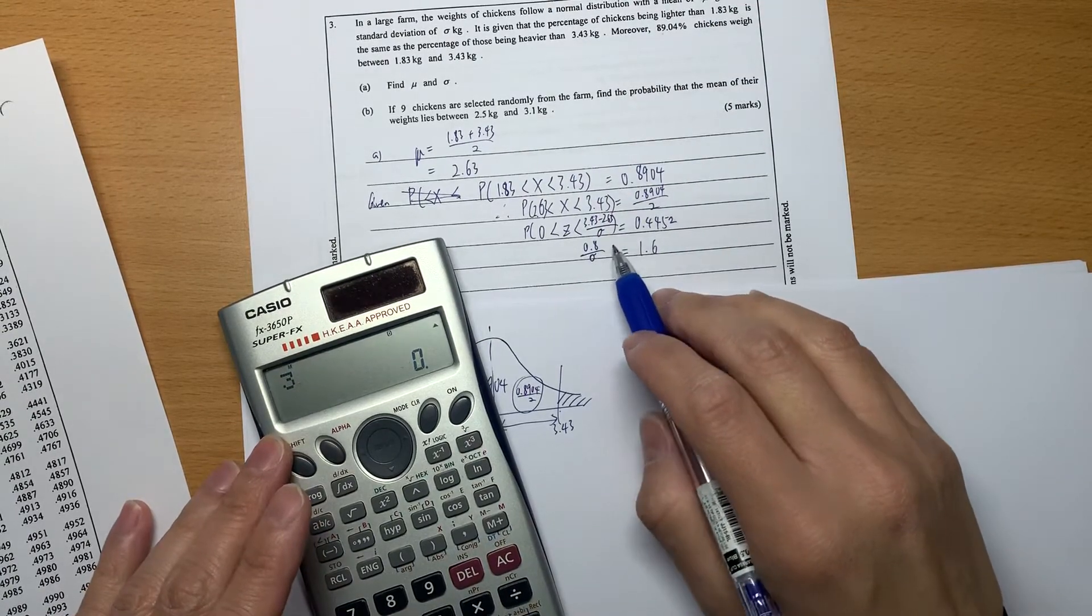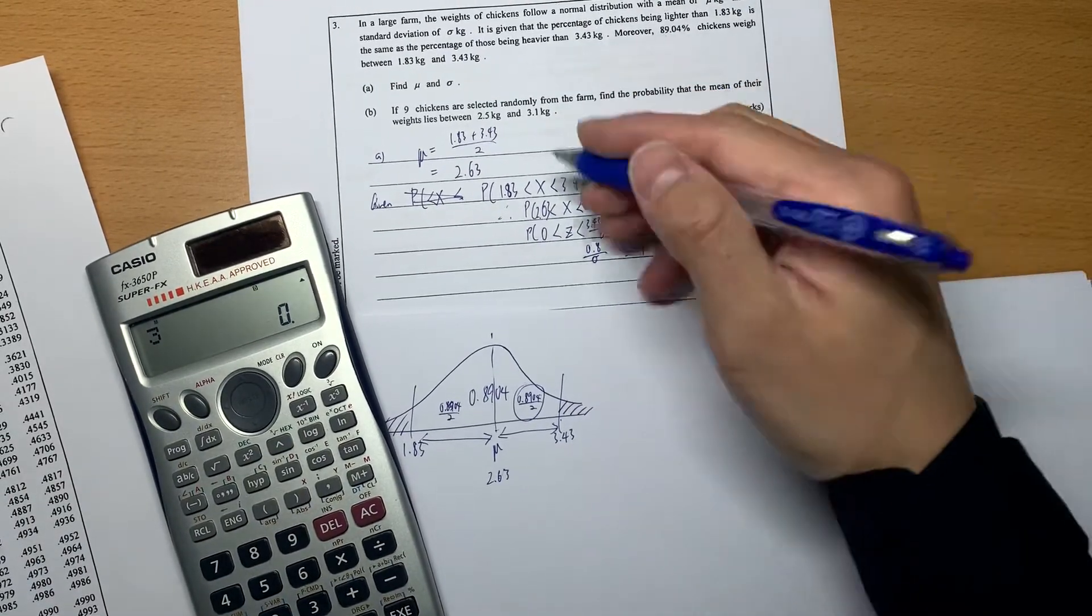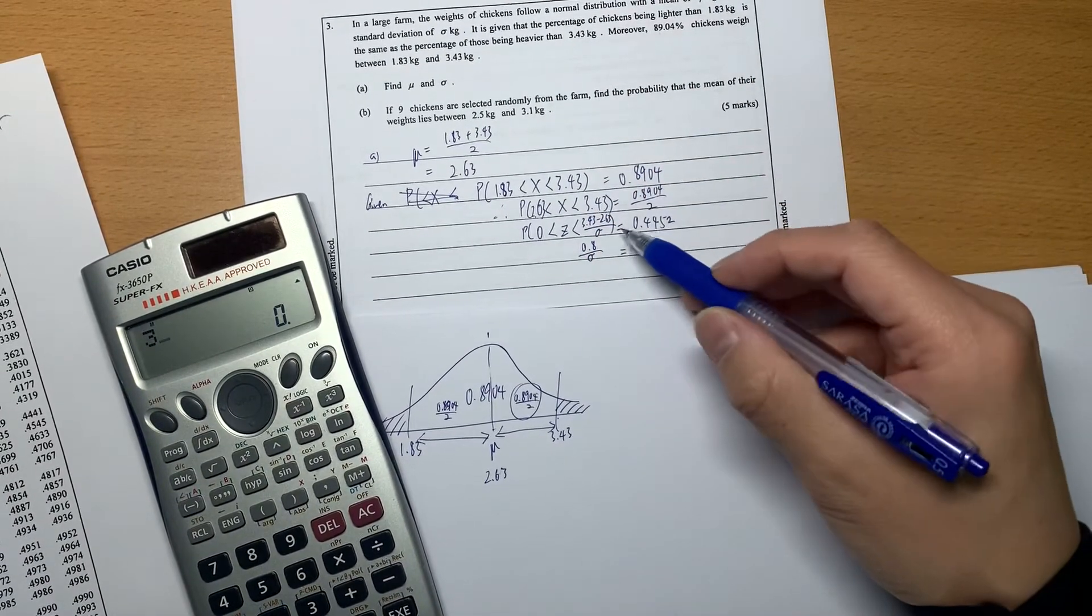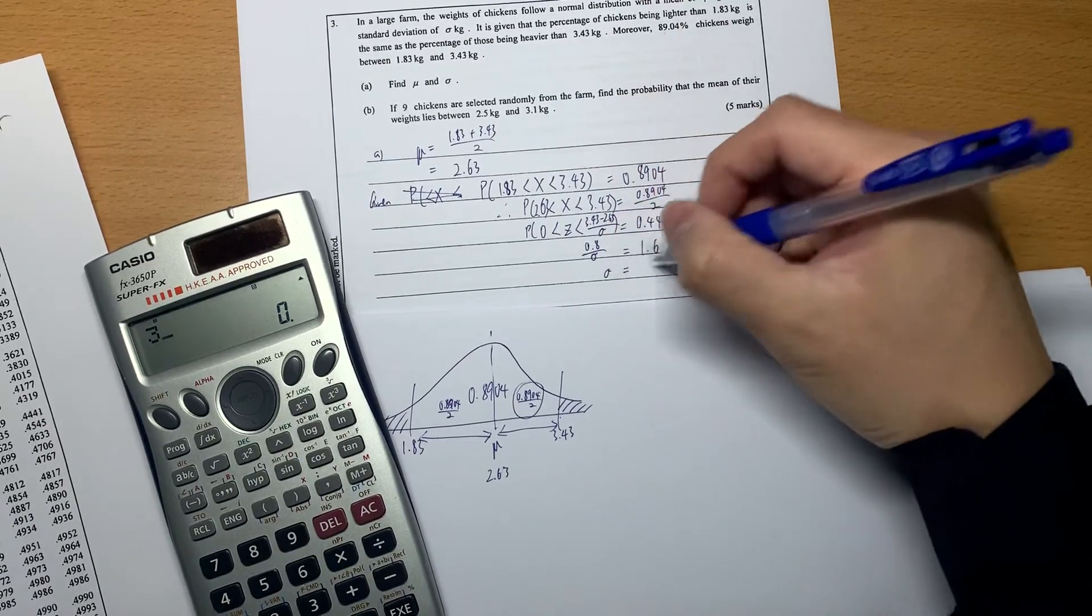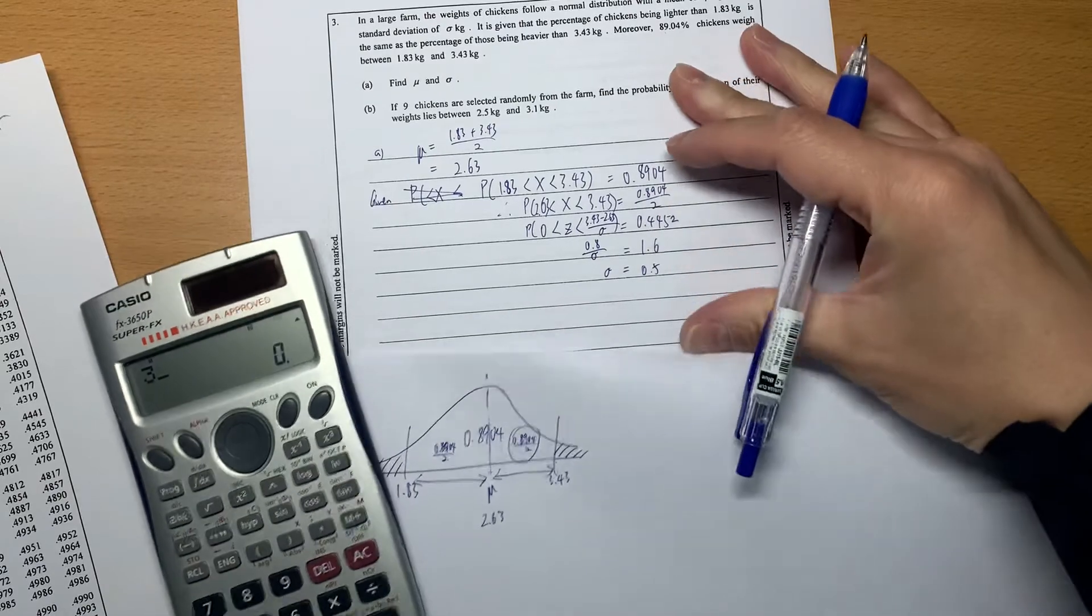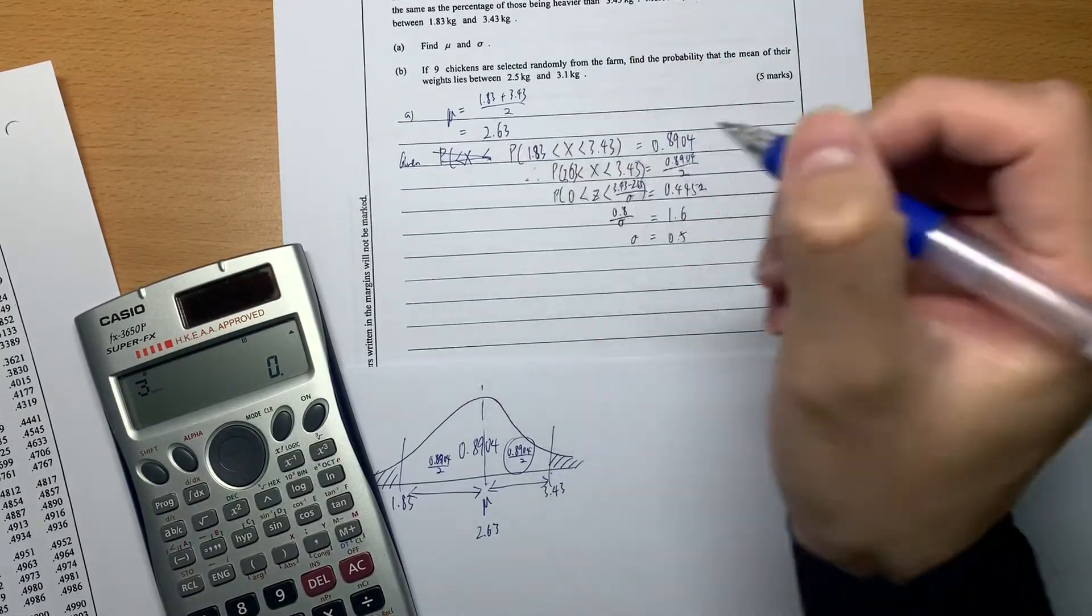Don't forget the transformation between the probability equation and the standard score calculation. Check this is in the right-hand side, so it should be positive value. σ equals 0.5. We finish Part A. Then we continue Part B.